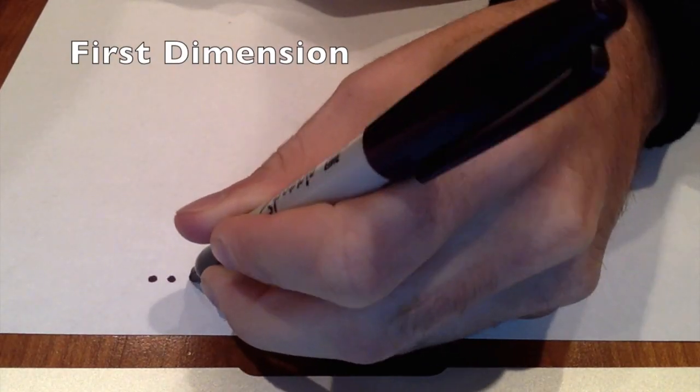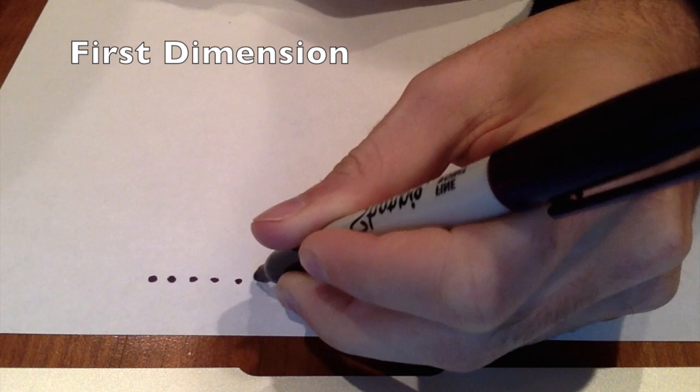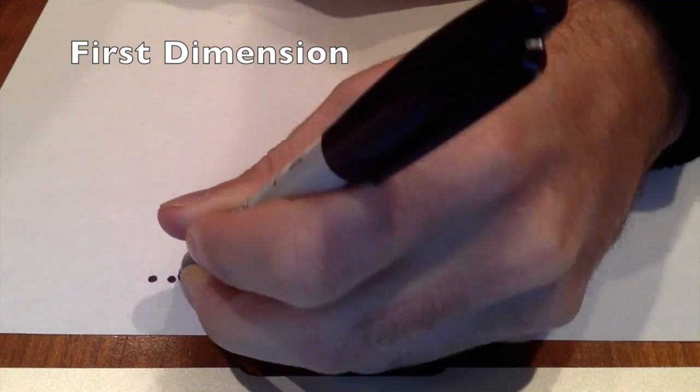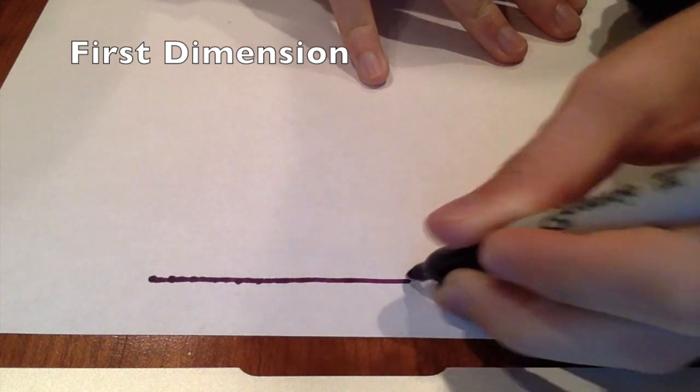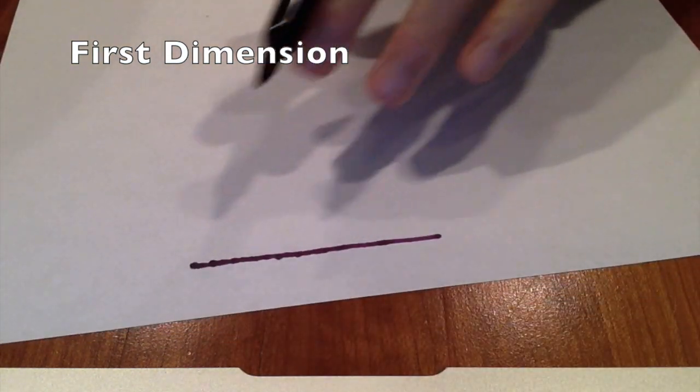What you're dealing with is an infinite number of dots right next to each other, so close that eventually it just becomes one line. The dimension exists only as a line.